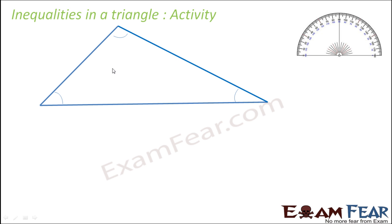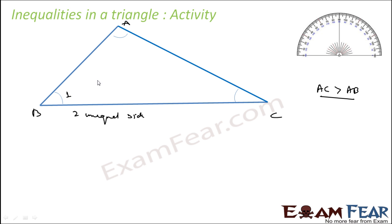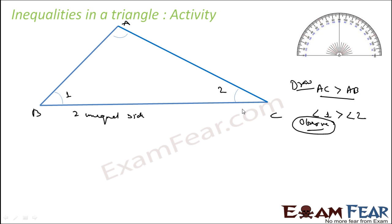Let us draw a triangle with two unequal sides and name it A, B, C where AC is greater than AB. Observe that the angle opposite to AC is angle 1, and the angle opposite to AB is angle 2. You see that angle 1 is greater than angle 2. This is drawn and observed — the same thing we are trying to conclude from the previous activity. So, bigger the side, the bigger is the opposite angle. Smaller the side, smaller is the opposite angle.